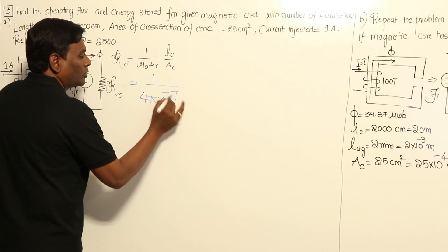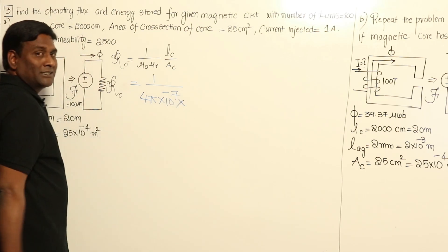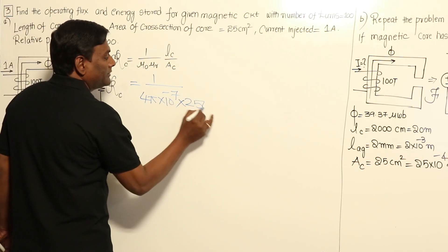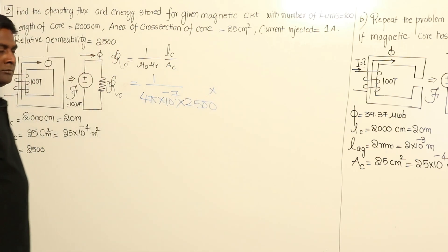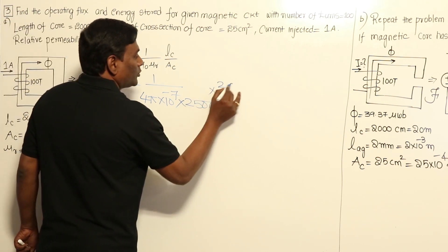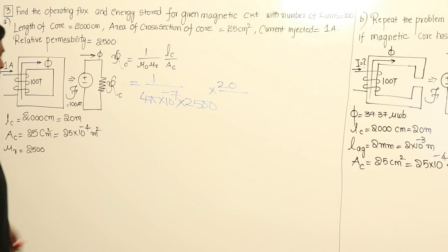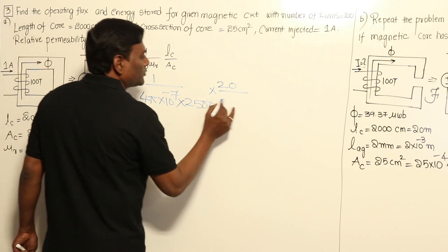Reluctance = 1/(4π × 10⁻⁷ × 2500) × 20 meters / (25 × 10⁻⁴ m²). The relative permeability is 2500, length of core is 2000 centimeters = 20 meters, and area of cross section is 25 centimeter square = 25 × 10⁻⁴ m².